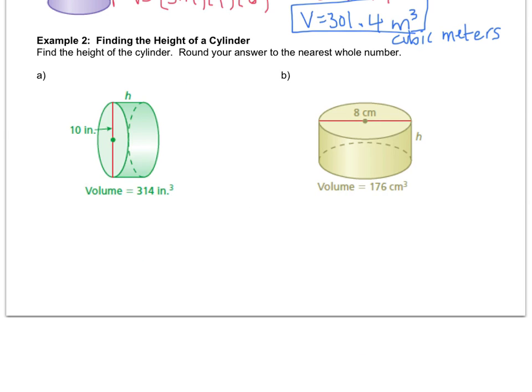In example two, we're not finding the volume — we actually have the volume given. This is another example of why it's helpful to write down the formula, because not everything is on one side. So write down: V equals pi r squared H. Now plug in what you know. The volume is 314, so that goes in for V — it goes in the V spot, not on the right-hand side.